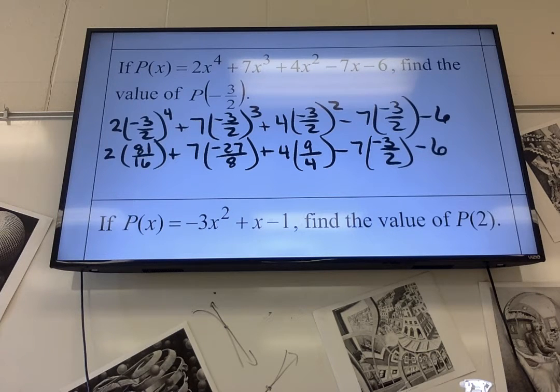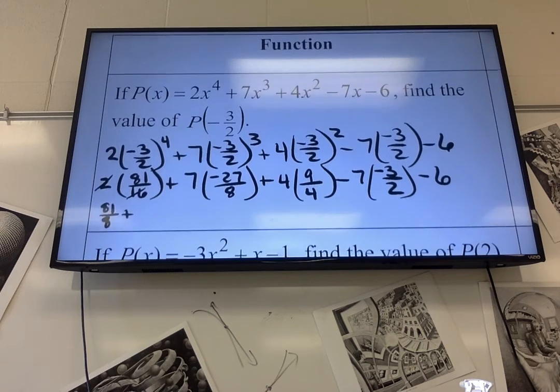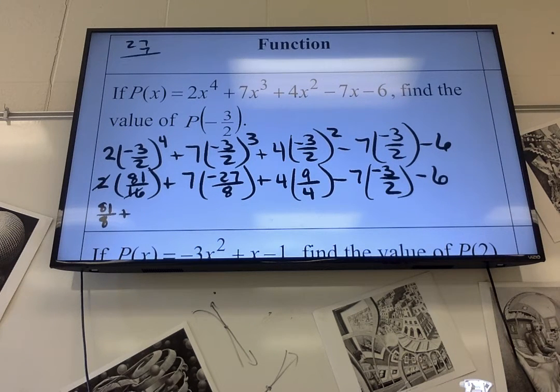I'm just going to leave this one alone for now. I'm going to cross-cancel here. So, it's going to be 81 over 8. That one won't cancel. 27 times 7. I got 189. Negative 189 over 8. Because, that's over 1.